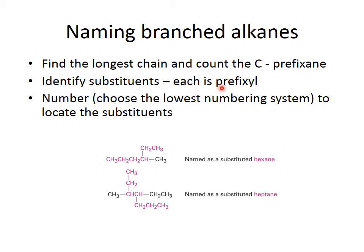Identify the substituents — each one has a prefix plus 'yl' ending, meaning the prefix for the number of carbons with 'yl' added on. So if you had five carbons in a substituent, you would call it pentyl. If you have eight carbons, you would call it octyl.